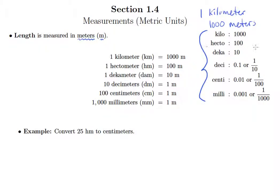We go down the list here: hecto means 100, deka means 10, deci means 1/10, centi means 1/100, and milli means 1/1000.